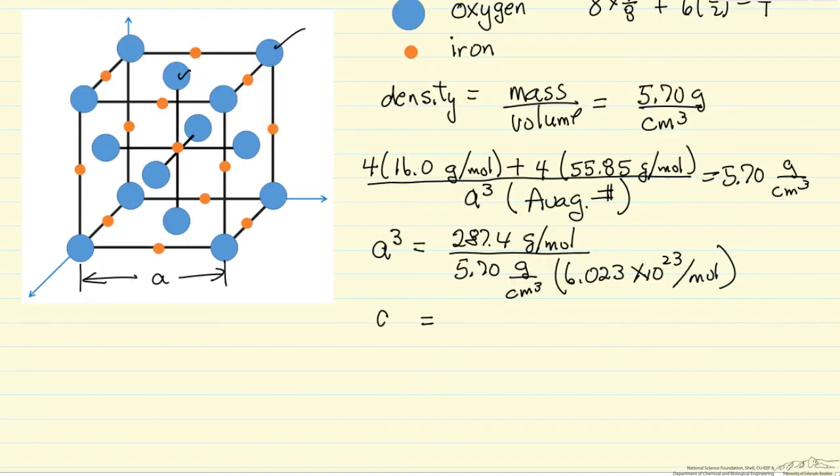A cubed is 8.37 times 10 to the minus 23rd centimeters cubed, which means A is 4.37 times 10 to the minus 8 centimeters.